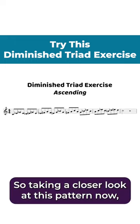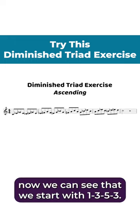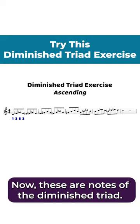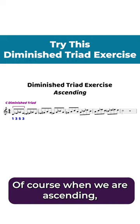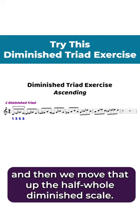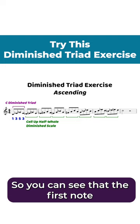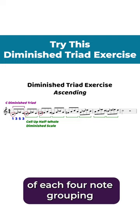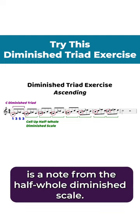Taking a closer look at this pattern now, we can see that we start with 1, 3, 5, 3. These are notes of the diminished triad. When we are ascending, we go ahead and take that 4-note cell — that 4-note triadic pattern — and then we move that up the half-whole diminished scale. You can see that the first note of each 4-note grouping is a note from the half-whole diminished scale.